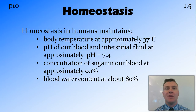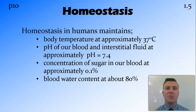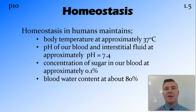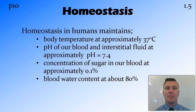If blood sugar increases too much, we go hyperglycemic — too much sugar. If it decreases, it's hypoglycemic — too little sugar. Both of these are a problem. As well as the water content in our blood, which needs to be at around 80% to keep those blood cells actually moving around the body and not getting all clogged up.